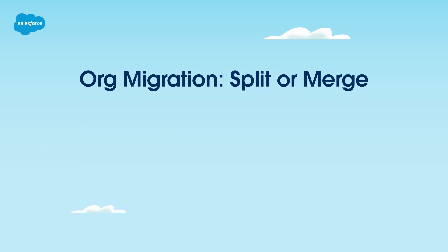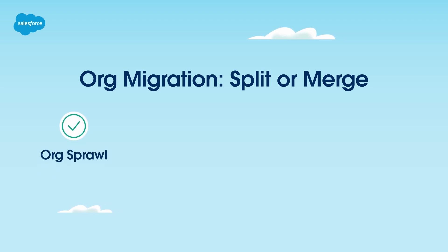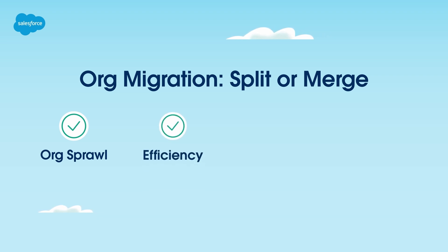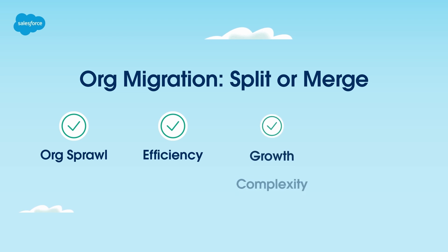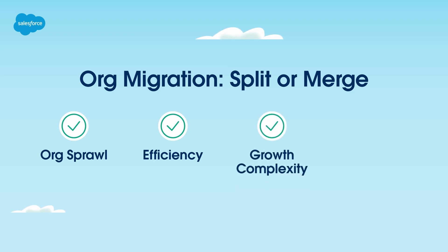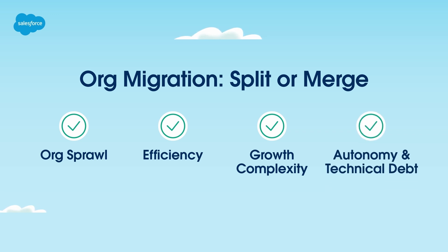There are many reasons why an org merge or org split may be necessary. These can include org sprawl — you may need to consolidate multiple orgs if they were created for a purpose that no longer applies. Efficiency: consolidating orgs can improve collaboration and process standardization and reduce admin effort. Growth and complexity: you may need to split orgs if they're too large and difficult to manage, which also slows the development lifecycle. Autonomy and technical debt: you can spin off a business unit into its own discrete org to increase autonomy and better manage technical debt.